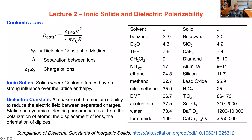Let's look at dielectric constants to get a sense of scale. Things like wax and benzene have a higher dielectric constant than vacuum, which is one by definition. As you go to more polar solvents like THF or ammonia, the dielectric constant goes way up. Water is about 80. Formamide has a dielectric constant of 100 — a huge difference in the energy of charge separation.